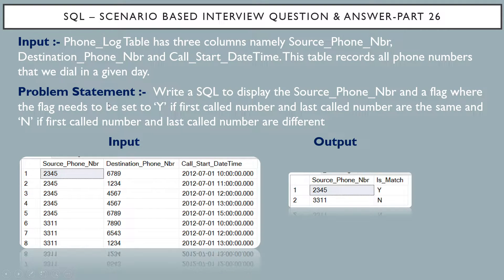Now let's see the problem statement. Write a SQL query to display the source phone number and a flag, where the flag needs to be set to Y if the first call number and last call number are the same, and N if the first call number and last call number are different.